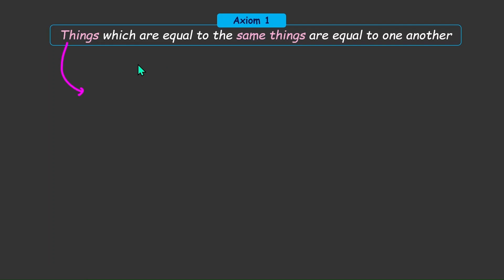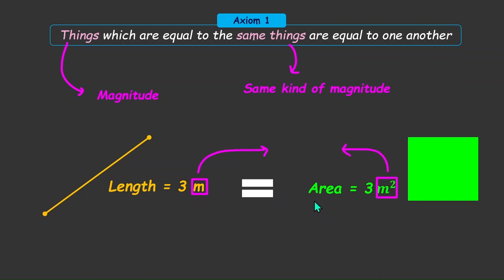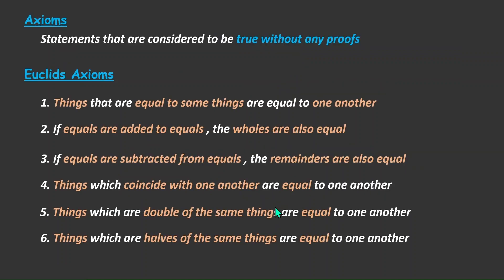When we talk about Euclid's axioms, when we say 'things,' we are referring to some sort of magnitude, and 'same things' means the same kind of magnitude. For instance, if I take a line whose length is 3 meters and a square whose area is 3 square meters, we can't say they are equal simply because both values are 3 — one is length and the other is area, they are not the same kind of magnitude. So we cannot apply Euclid's Axiom 1 to compare them.